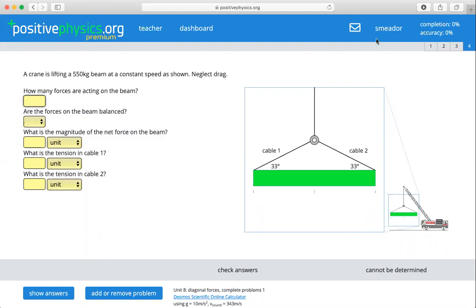I'll do part of it, we'll talk a little bit about it, set it up, and then you guys can go from there. So a crane is lifting a 50 kilogram beam at a constant speed as shown, neglect drag.